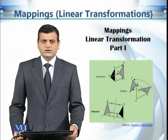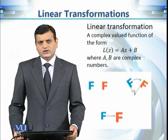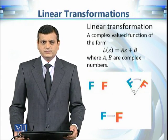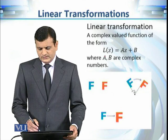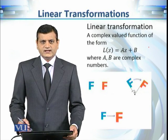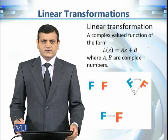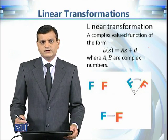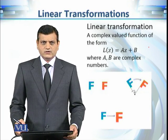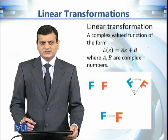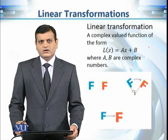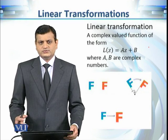This is the first part of our discussion on linear transformations. A linear transformation is a linear polynomial — a particular case of a polynomial of the form L(z) = az + b, where a and b are fixed complex numbers and z is the complex variable. If we change the values of a and b we get some particular examples of linear transformations, and we will see their geometrical interpretation and the mappings associated to them.